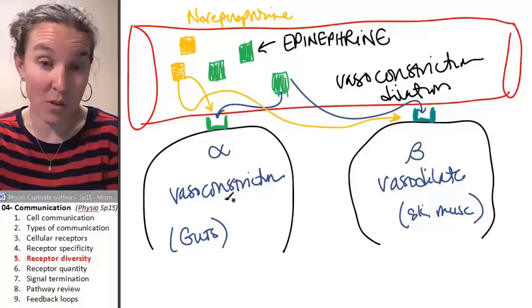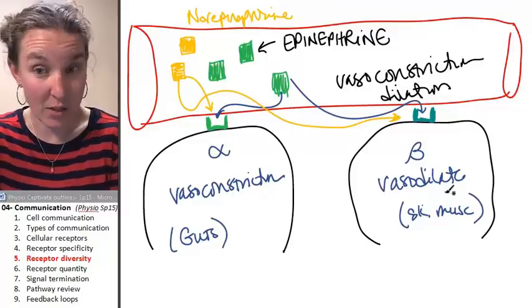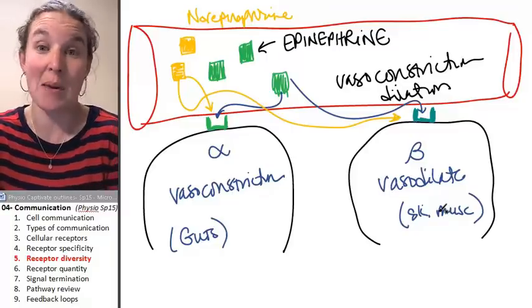Norepinephrine is going to cause vasoconstriction in the guts and it's going to cause vasodilation in the skeletal muscles, same as epinephrine.